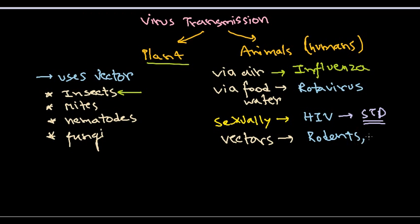Rodents can act as vectors, insects can act as vectors, mites can also act as vectors and all these things. Now the example for this vector-borne virus infection in human beings is yellow fever and the virus is yellow fever virus.